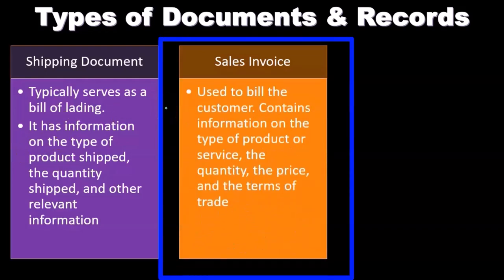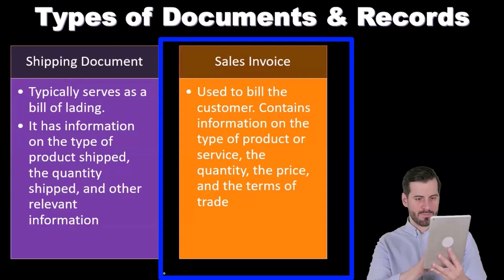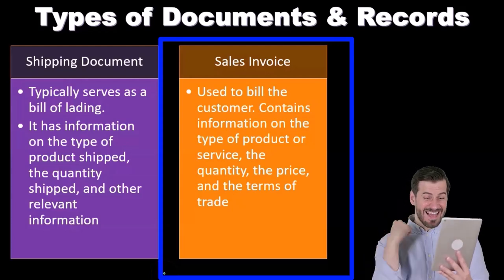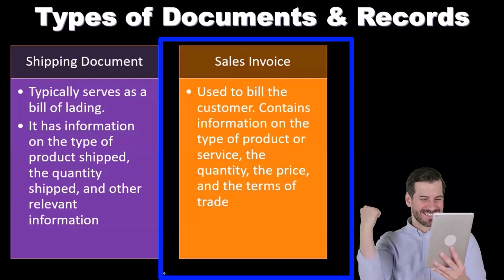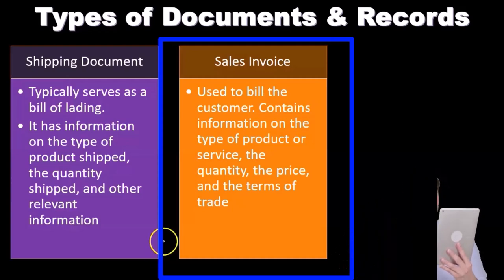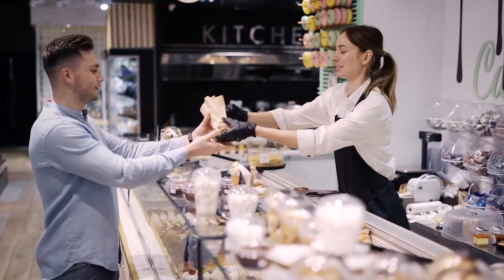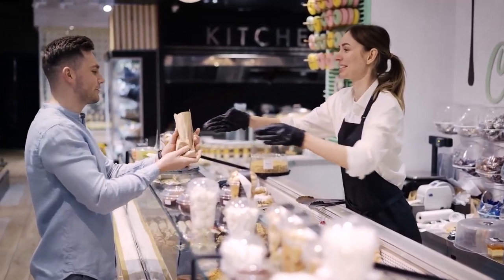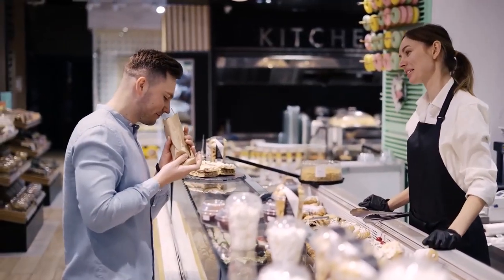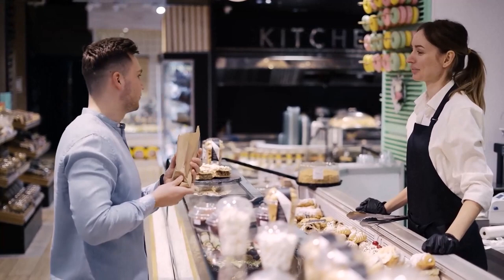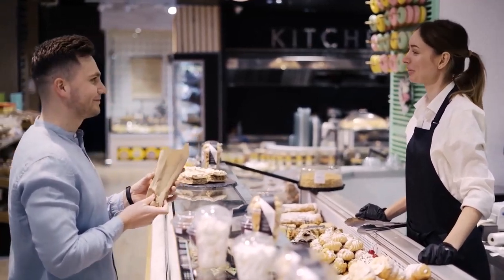Then we have the sales invoice, used to bill the customer. It contains information on the type of product or service, the quantity, the price, and the terms of the trade. The sales invoice is our invoice — we usually call it an invoice from our side, but to the customer it's the bill. We're sending out the invoice to the customer, and they are receiving the bill. This is usually the point in time, in a lot of accounting, where revenue is recorded.